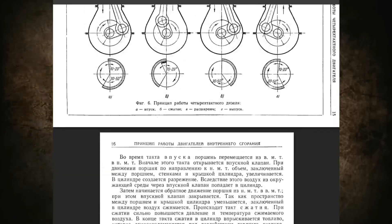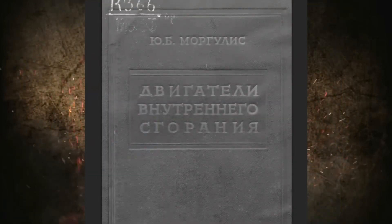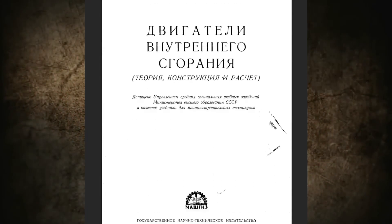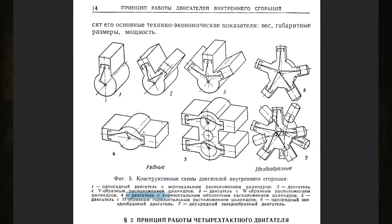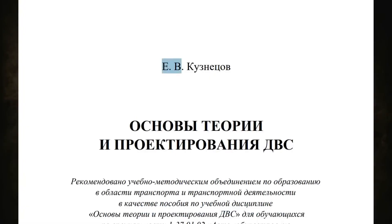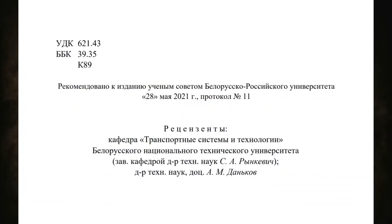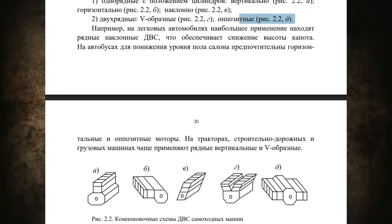Let's look at some more serious literature. In the 1959 edition of Internal Combustion Engines by UWU B. Margulis, on page 14, the engine of this configuration is called an engine with a horizontal opposed cylinder arrangement — reference number three. Note that the illustration is primitive, and based on the connecting rods position, this is a V-twin with 180-degree cylinder angles. In the 2021 edition, Fundamentals of the Theory and Design of Internal Combustion Engines by E.V. Kuznetsov, pages 19 to 20, a similar illustration refers to this engine as an opposed engine — reference seven.